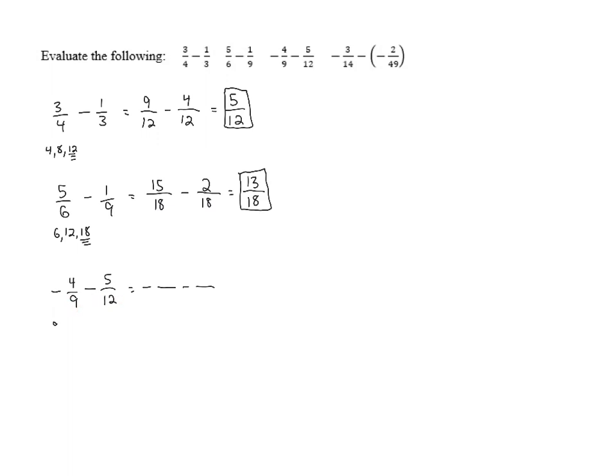And we need a common denominator. We've got 9 and 12. If we write out the multiples of 9, we get 9, 18, 27, 36. And we recognize that that's also a multiple of 12. So 36 is going to be our LCD.